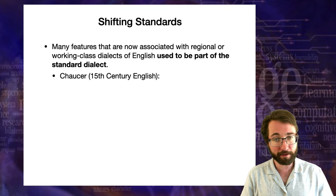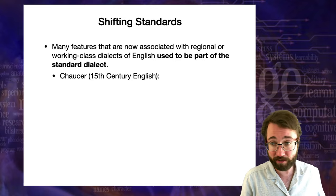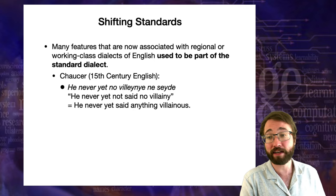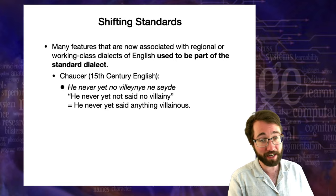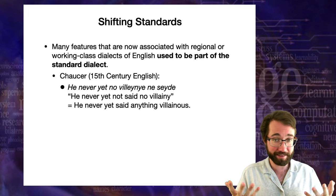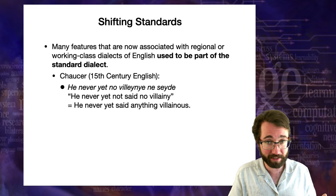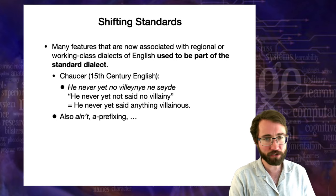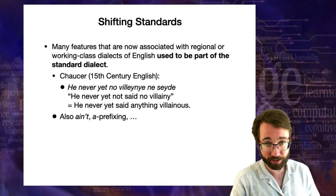Many features now associated with regional or working class dialects used to be part of the standard language — which goes toward making the point that standard American English is not more logical than any other dialect. For example, in Chaucer — considered beautifully well-crafted English from the 15th century — you get sentences like 'he never yet no villainy ne said,' showing double negation. This was perfectly standard English at the time. Words like 'ain't' and a-prefixing are also things that used to be part of the standard language, dropped out, and are now preserved in regional dialects.